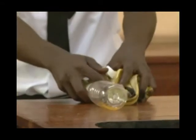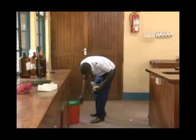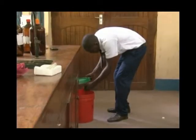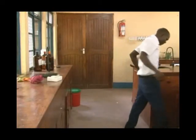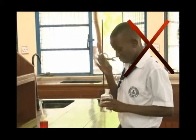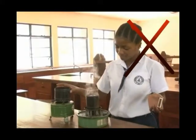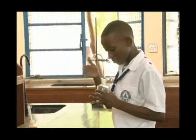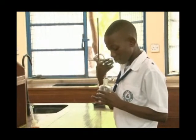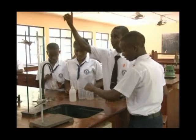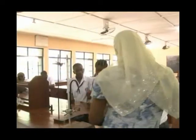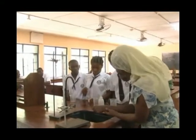Rule number six: always dispose of all used chemicals, specimens, or substances in a safe manner in the dustbins. Rule number seven: never smell substances, specimens, chemicals, or gases directly, but direct the fumes carefully towards you with your hand. Rule number eight: any accident involving chemicals or apparatus in the laboratory must be reported immediately to the teacher or instructor in charge.